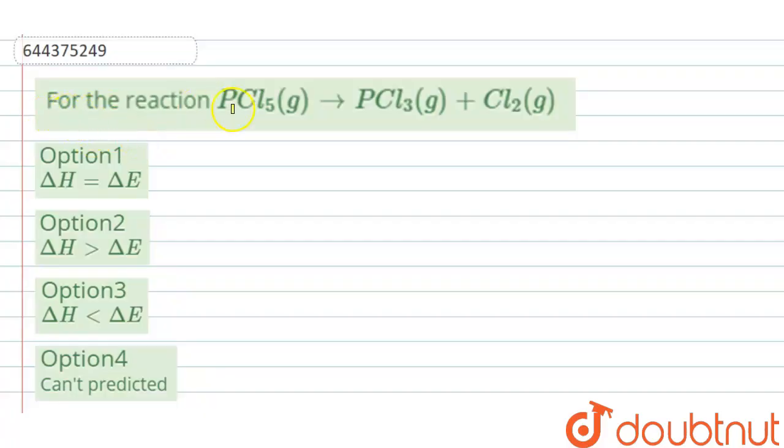The question is for the reaction PCl5 giving PCl3 plus Cl2. The options are: delta H equals delta E, delta H is greater than delta E, delta H is less than delta E, or it can't be predicted.